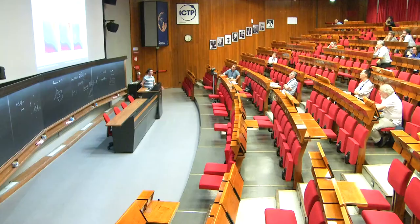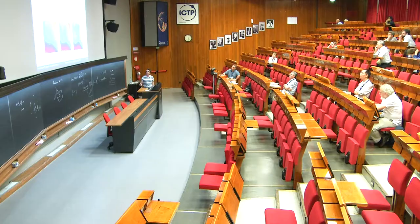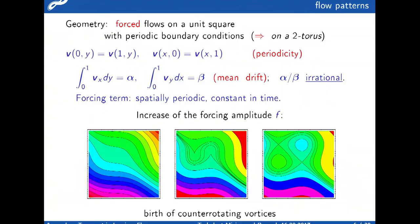You can write down this forcing term in the Navier-Stokes equations and write out an explicit solution. When you increase the amplitude from zero, you have straight streamlines. When you increase the amplitude further, you have a topological transition. From straight streamlines which cover the whole torus, you see how vortices are formed. Then you have a mixed phase space with streamlines going around the torus and isolated vortices.